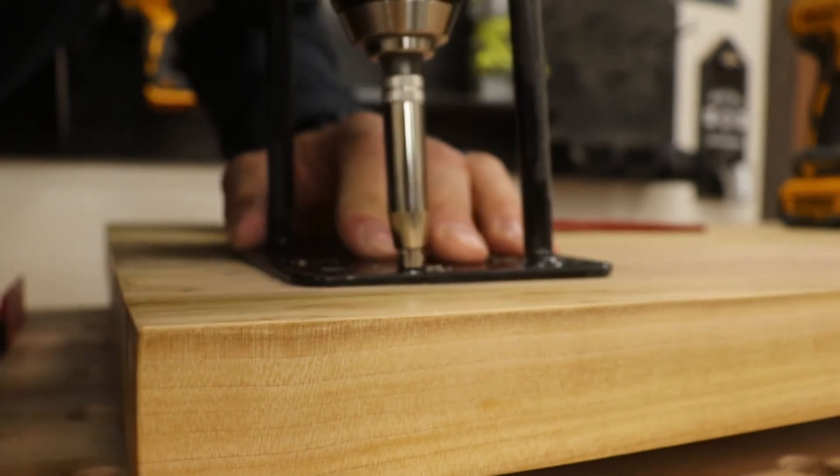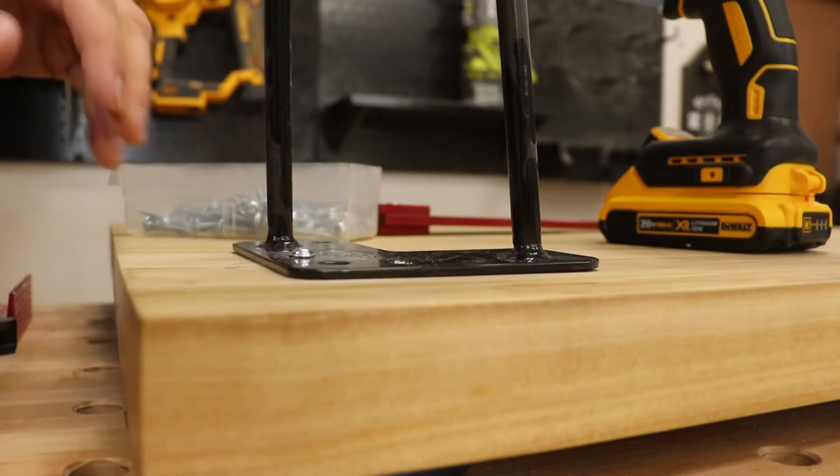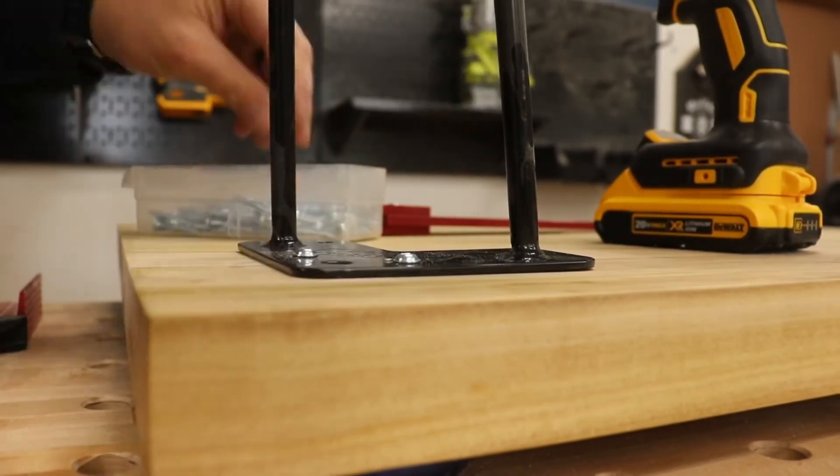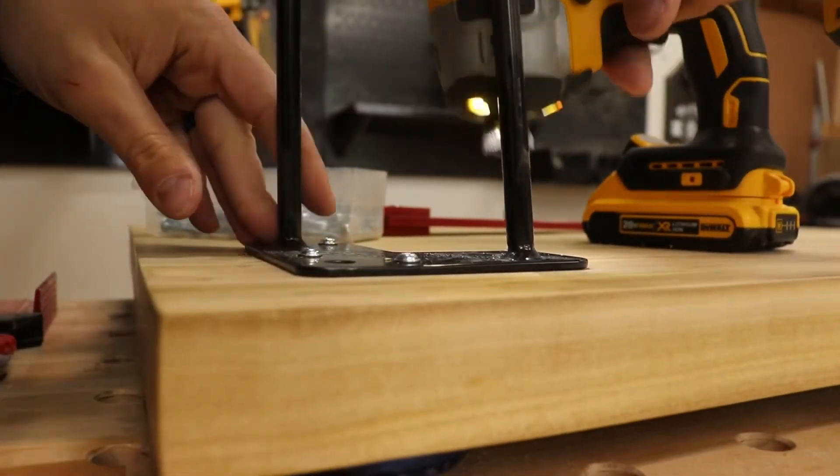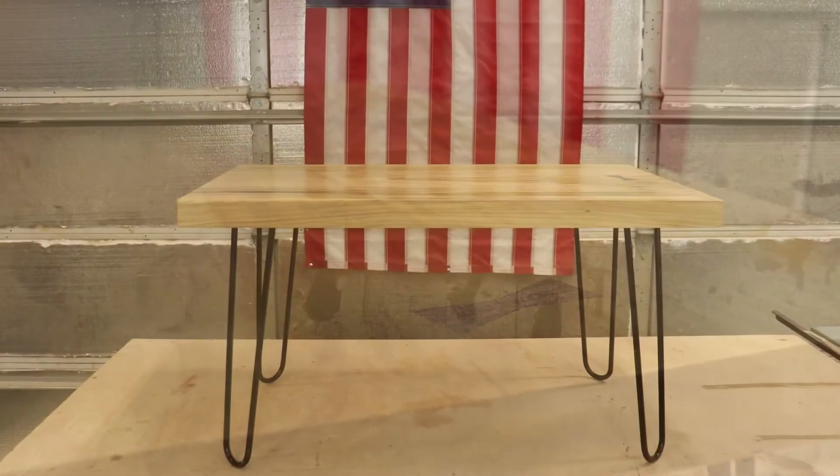Lastly, what I did was just attach the legs and that's it. Pretty simple project. Hope you guys enjoyed it. It was a big upgrade from the old farmhouse style coffee table we had in our living room before.